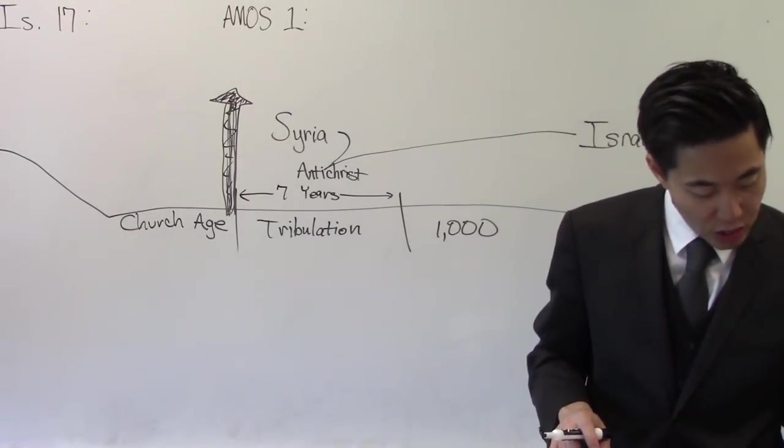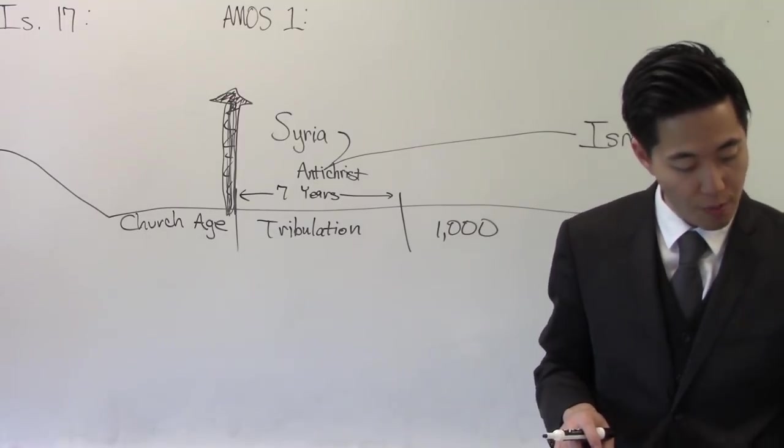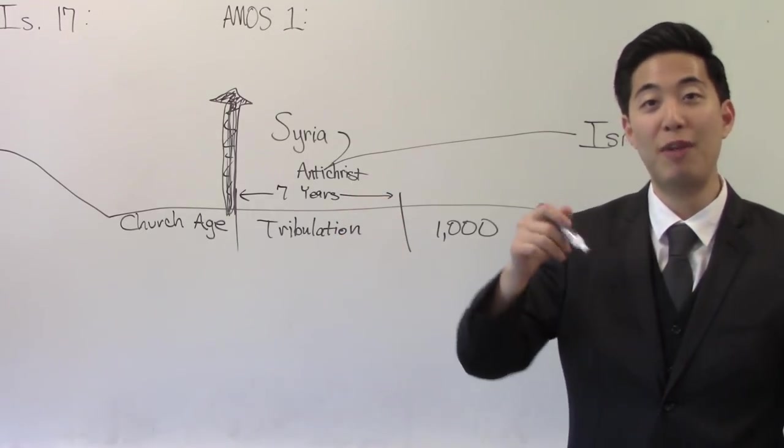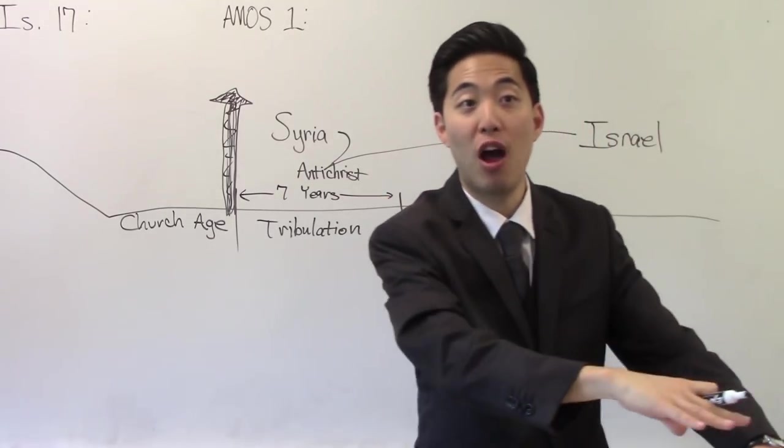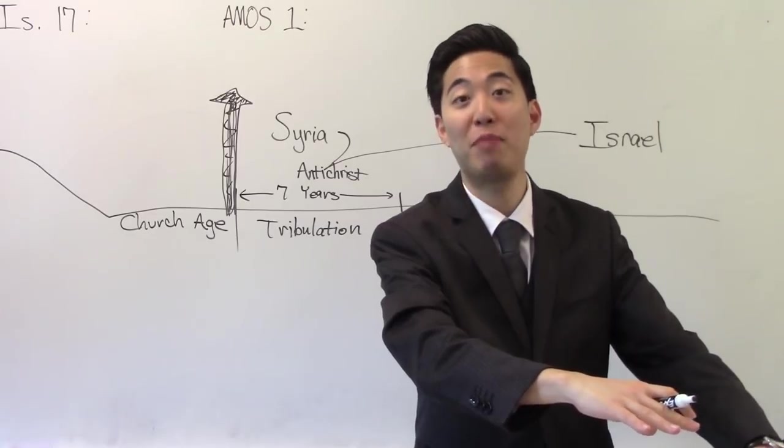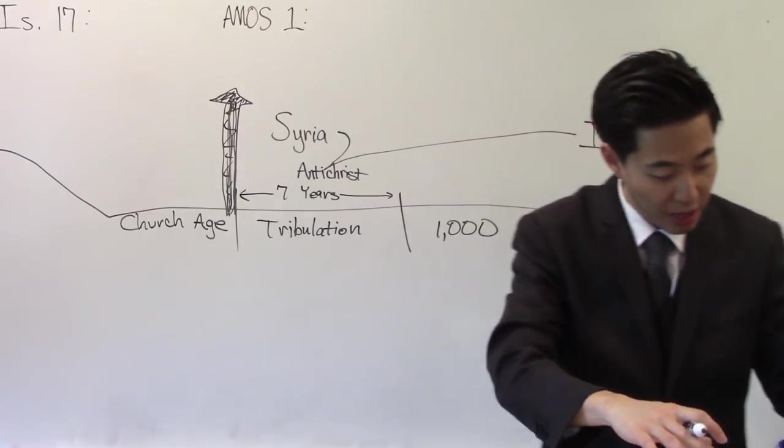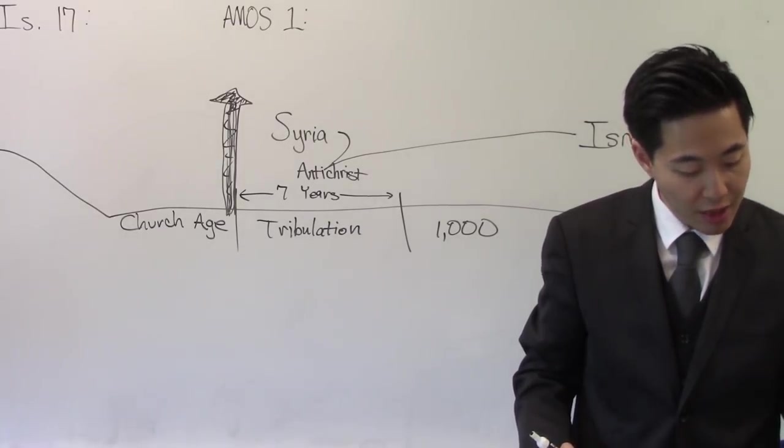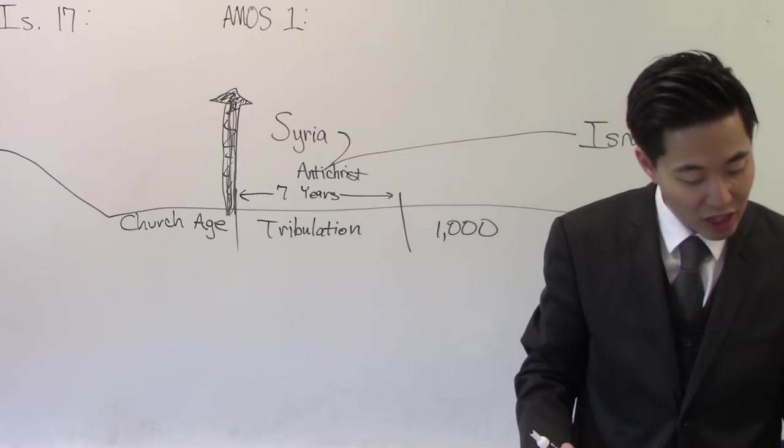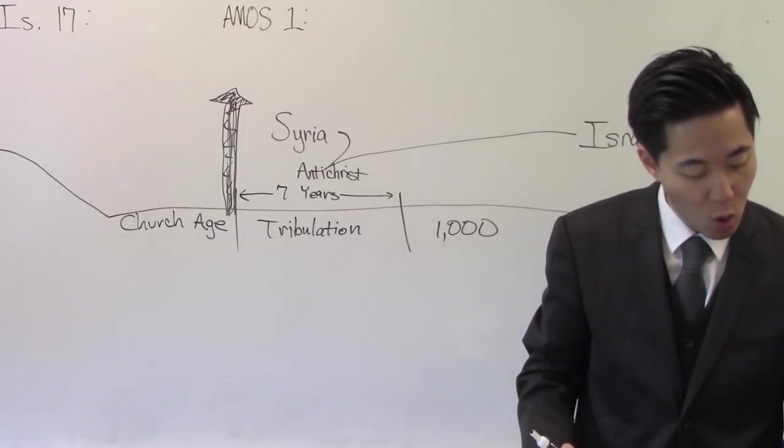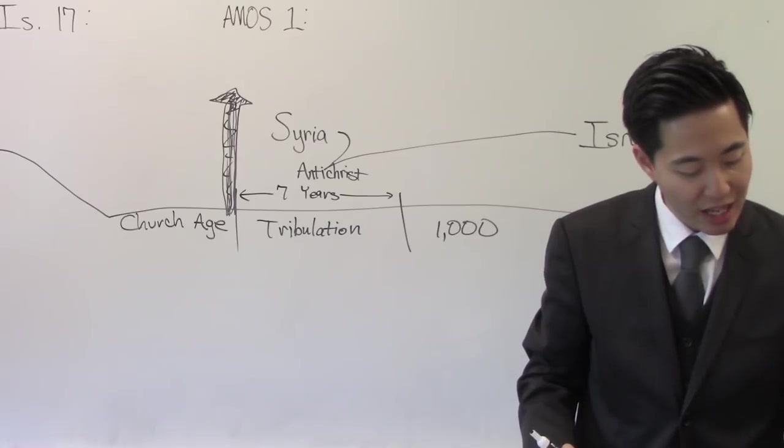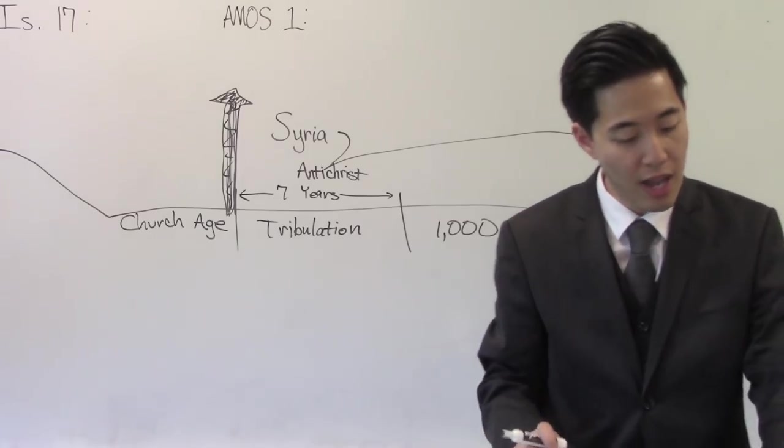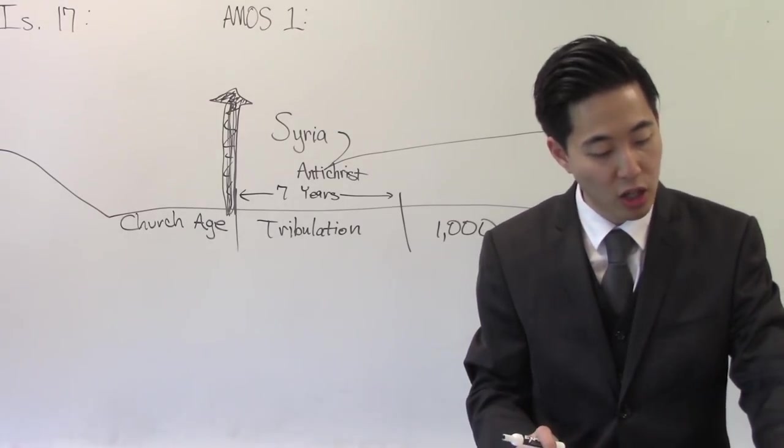But this verse is applying to the tribulation, you understand. This passage, Isaiah 17, is applicable to the second advent when God comes down and then conquers Syria and then reclaims Israel. This has nothing to do with today's time period. How do we know that, Pastor? Well, the reason why we know that is because in verse 4, in that day, see, a particular day. And if you read about day of the Lord throughout the entire major prophets, prophecies, you know what they mean about that day, the day, or the day of the Lord. Keep reading. In that day shall come to pass, that the glory of Jacob shall be made thin, and the fatness of his flesh shall wax lean.